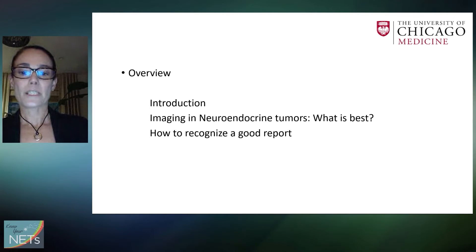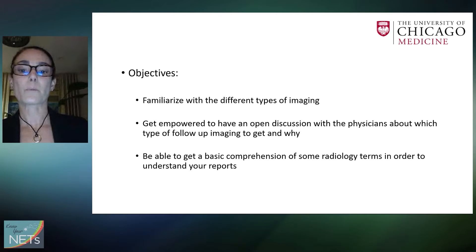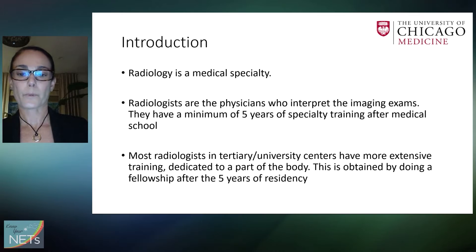The overview of this lecture: we're going to start with a little introduction, talk about imaging in neuroendocrine tumors, what is best, and how to recognize a good report. The objectives are to familiarize with the different types of imaging, gain the power to have an open discussion with physicians about which type of follow-up imaging to get and why, and to get a basic comprehension of some radiology terms in order to understand your reports.